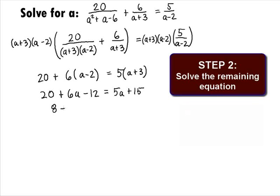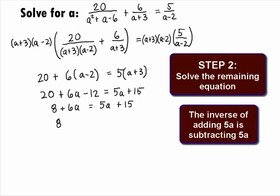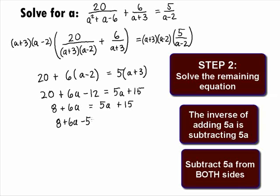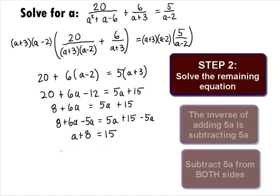Combining like terms, we get 8 plus 6a on the left side equals 5a plus 15 on the right side. Next, we want to get all the a terms on one side. The inverse of plus 5a is to subtract 5a, so we'll end up with 8 plus 6a minus 5a equals 5a plus 15 minus 5a. On the left side, that gives us a plus 8 equals 15 on the right side.